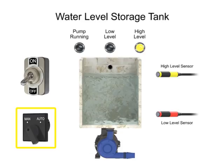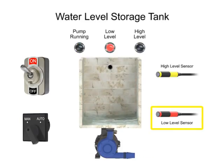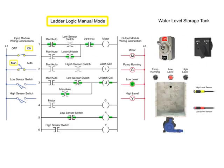In Manual mode, the program controls the water level by monitoring the low sensor switch input. In this mode, the pump motor turns off when the low sensor switch is off and turns on when the low sensor switch turns on.